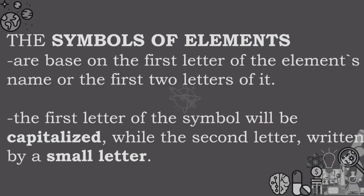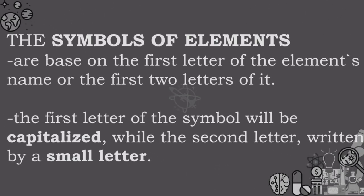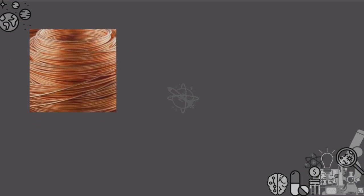The periodic table consists of 118 elements and is presented by symbols. The symbols of elements are based on the first letter of the element's name, or the first two letters of it. The symbol for copper is Cu. It stands for cuprum, which is the Latin word for copper.